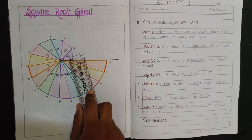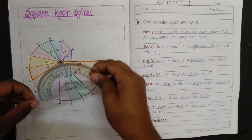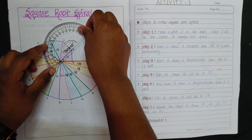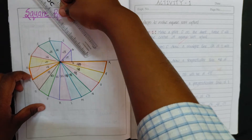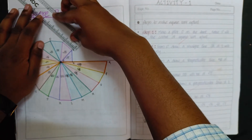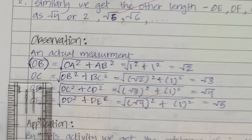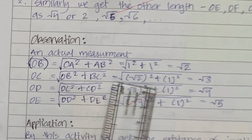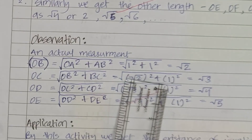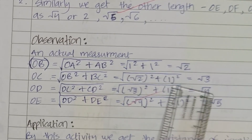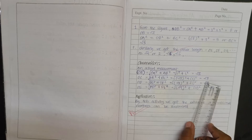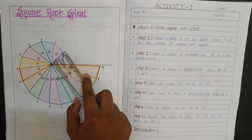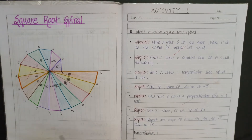Hence OB equals root 2. Again, at point B we will draw a perpendicular of one unit, which will be BC. The length of OC will be the square root of OB squared plus BC squared, which equals root of (root 2) squared plus 1 squared, giving root 3. Hence OC equals root 3.